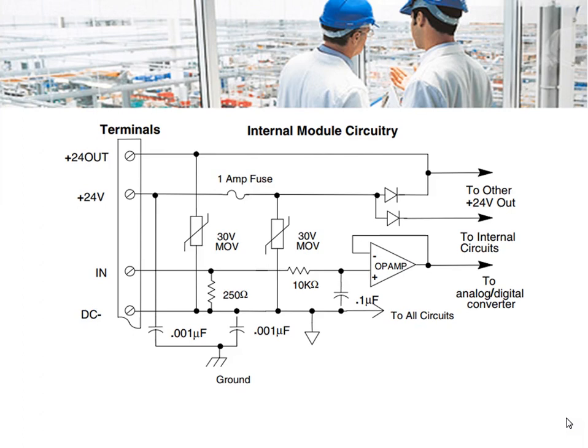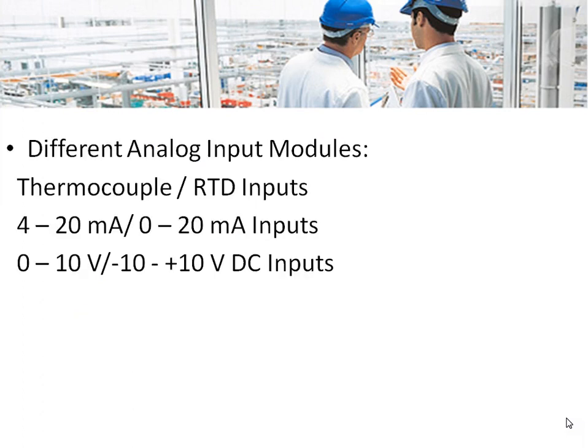Different common analog input modules include thermocouple and RTD input modules, 4 to 20 milliampere and 0 to 20 milliampere inputs, and 0 to 10 volts and minus 10 to 10 volts DC inputs.